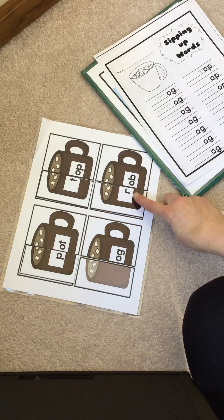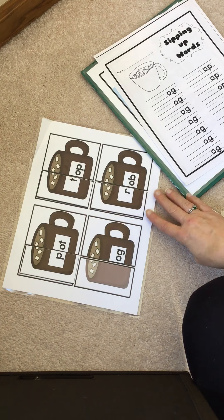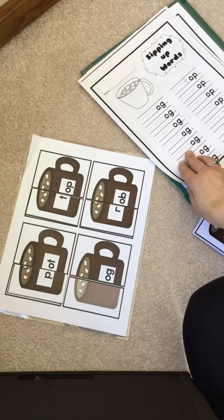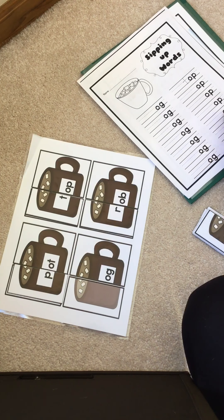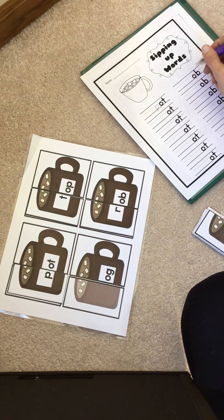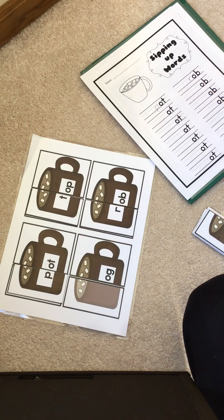'Rob, rob, rob, rob,' yes, like a bad guy could rob a store. Let's see, so let me find the 'ob,' 'ob.' Oh, here they are, the 'ob' words. So I need to put an 'r' in front. Rob, rob, rob.